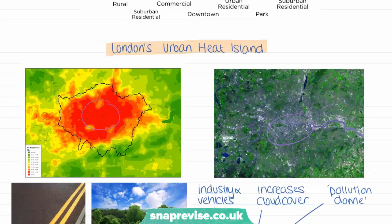What's also interesting to notice is that this little yellow spot in the middle of London can also be seen on the satellite image. This is because this is a park space. And as mentioned earlier, where we have parks within cities, this causes a little space where the temperatures are generally cooler.